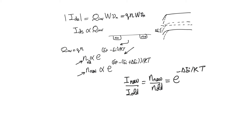We start to see a multiplicative relationship for subthreshold conduction: if we apply band bending delta E_I to the silicon, the current increases by e to the power of delta E_I over kT. However, this is not very useful because delta E_I is an internal energy bending in the bands of silicon — not something we can see at the circuit level.